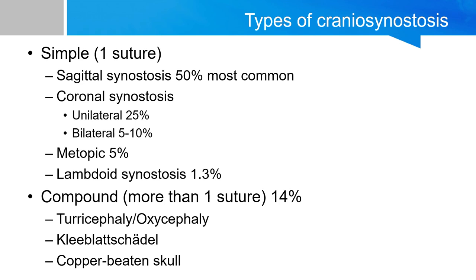In terms of simple cranial synostosis, the sagittal suture is by far the most commonly involved, followed by unilateral coronal synostosis, then bilateral coronal synostosis, and then metopic and lambdoid synostosis. Compound cranial synostosis is defined as involvement of more than one suture — two or more — and as a whole, its incidence is about 14%.